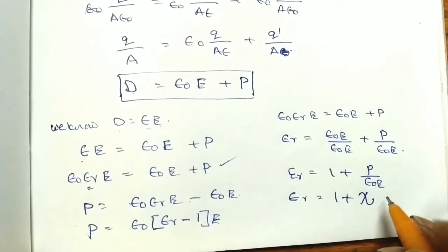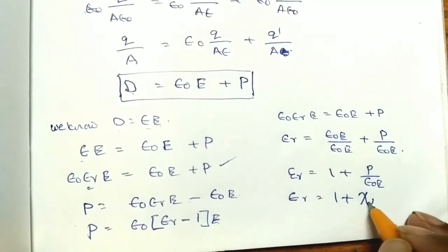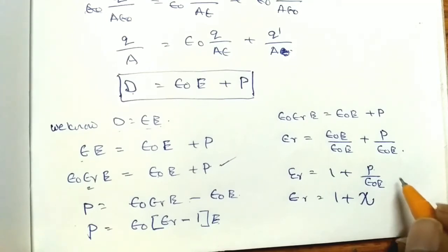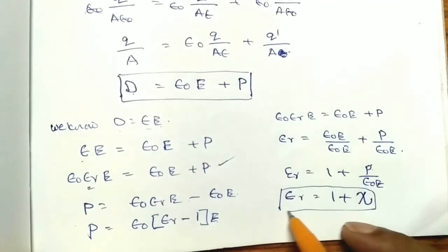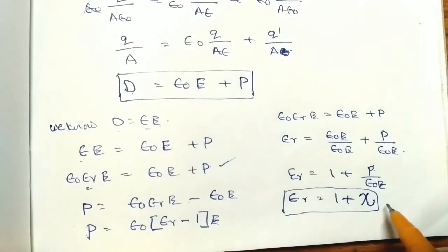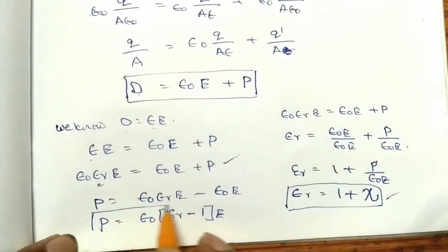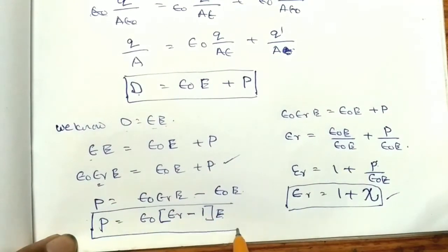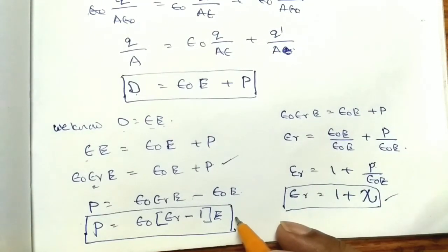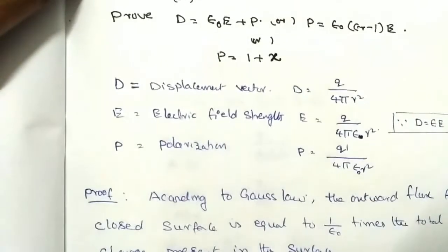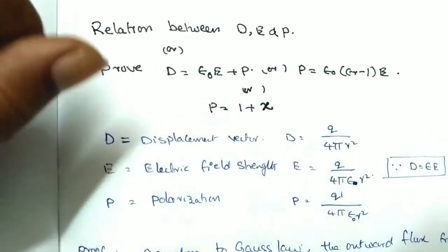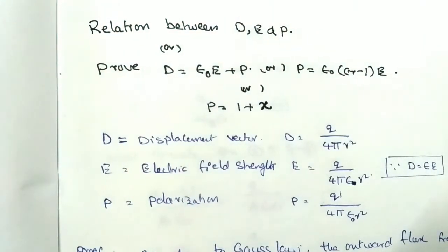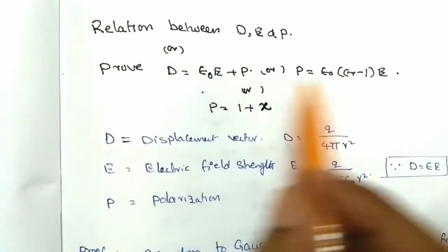Susceptibility chi is defined as P by (epsilon naught times E) — that is, the ratio of polarization to the product of permittivity of free space and electric field strength. These three equations are also very important for solving further problems. The actual question may ask to show or prove the relation between D, E, and P.